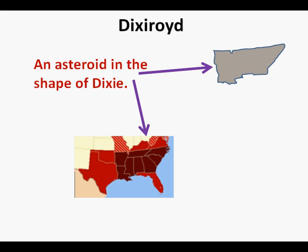Those states are Louisiana, Arkansas, Mississippi, Tennessee, Alabama, North Carolina, South Carolina, and Georgia all together. Do you see that the shape of a Dixieroid is the same?